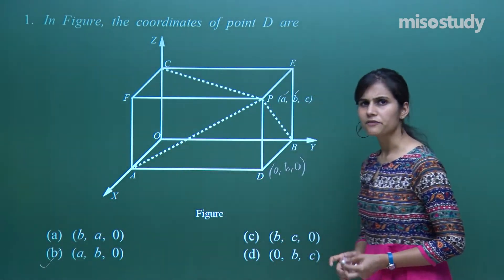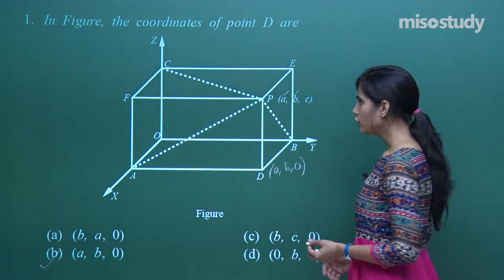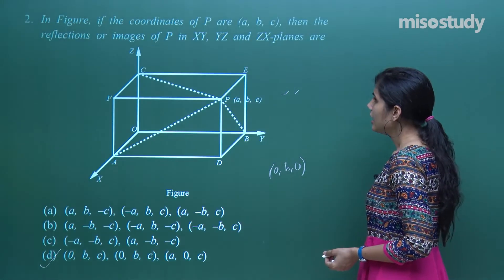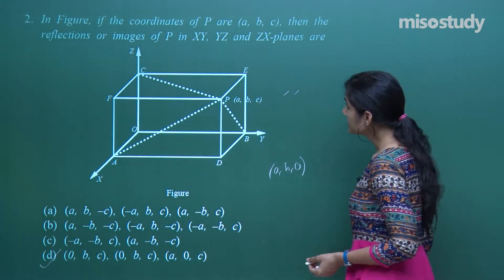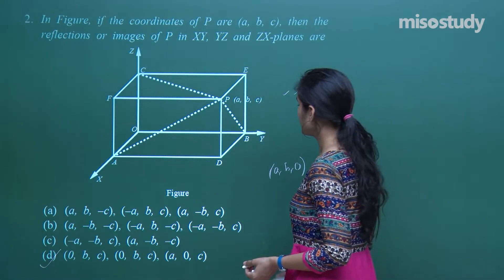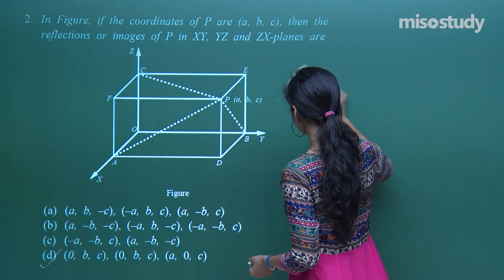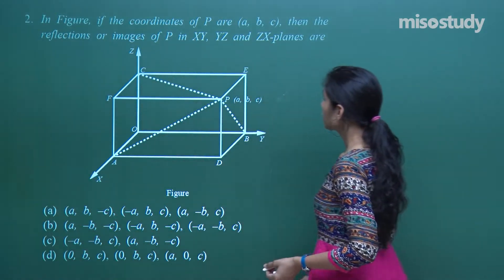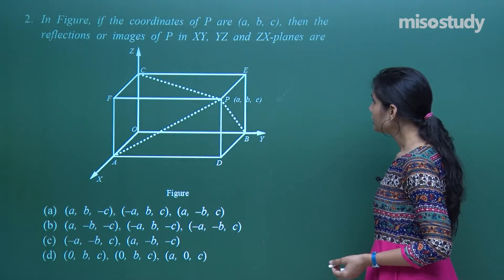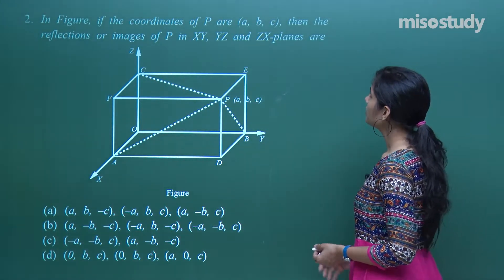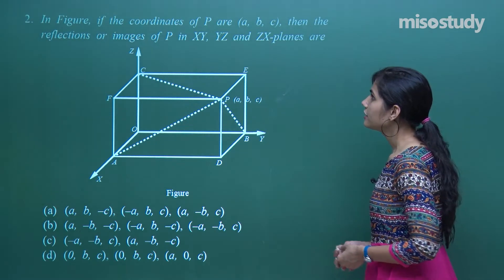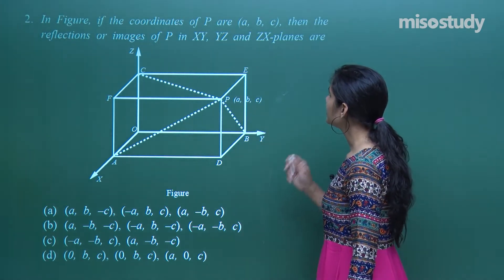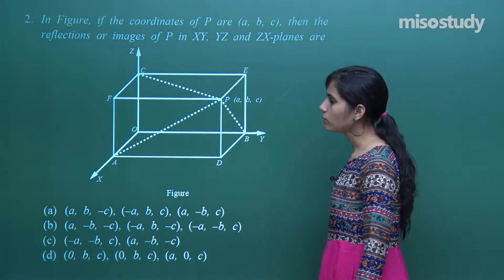Moving on to the next question: in the same figure, if the coordinates of point P are (a, b, c), then what are the reflections of P in the x-y plane, y-z plane, and x-z plane?